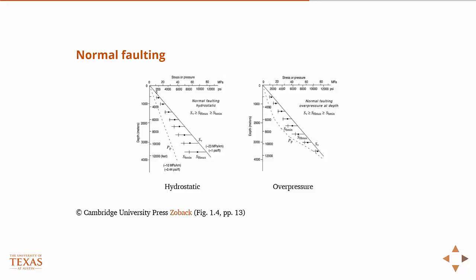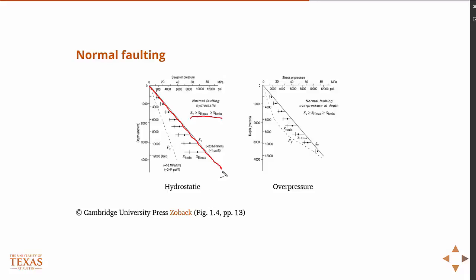In normal faulting, according to Andersonian fault theory, the vertical stress is greater than SH max, which is greater than SH min. The vertical stress is the greatest — the largest value. The pore pressure has to be less than the maximum stress difference, otherwise you'd have hydraulic fractures. So these are the upper and lower bounds in the normal faulting regime.